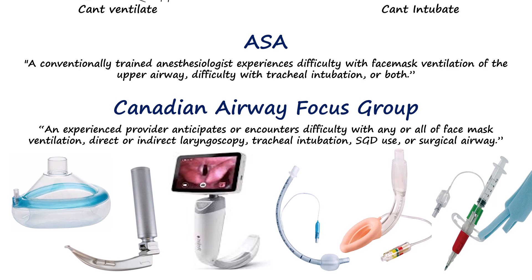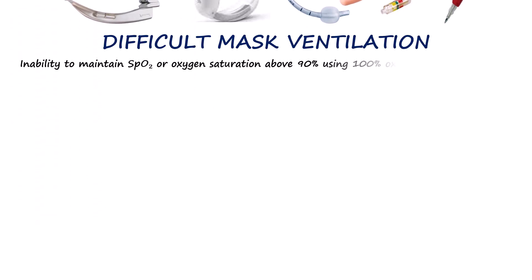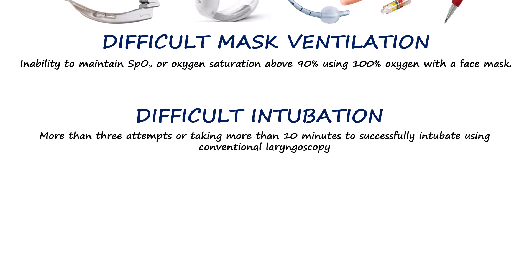So difficult airway is a broader term used to describe the wider set of airway issues we might encounter. Among them, what concerns us most is difficult mask ventilation and difficult intubation, as they are our primary tools when dealing with a patient's airway. Difficult mask ventilation is defined as the inability to maintain SpO2 above 90% using 100% oxygen with a face mask. Difficult intubation is defined as requiring more than 3 attempts or more than 10 minutes to successfully intubate using conventional laryngoscopy. The incidence of difficult bag-mask ventilation is reported to be between 1.4% and 15%, while difficult intubation ranges from 5% to 8% with a standard laryngoscope.